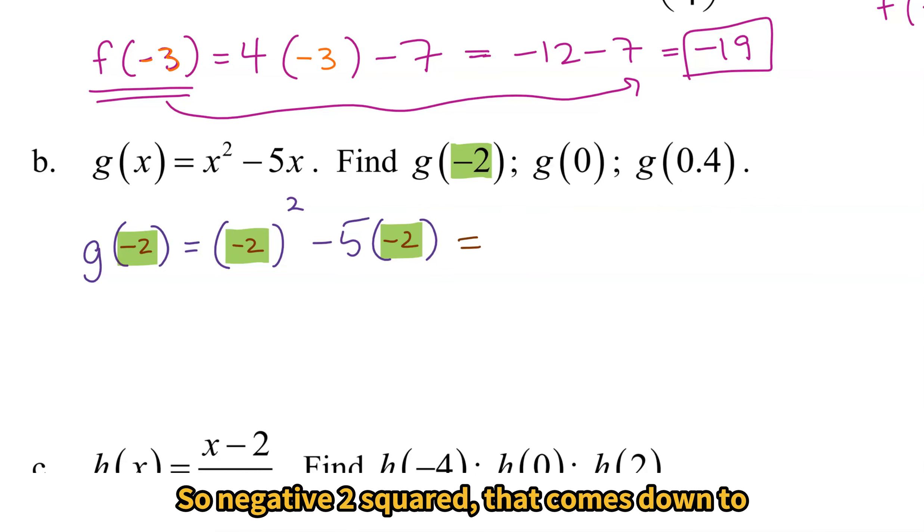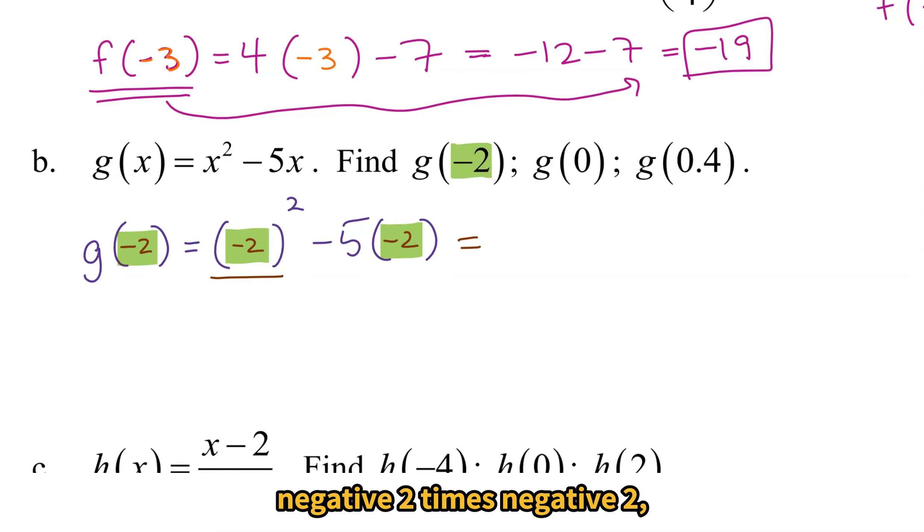So I'm going to put in -2 into all of the parentheses. It's just another way to think about evaluating to create this skeleton that then you can plug in the numbers. So (-2)² comes down to -2 times -2, which will give me a positive 4. Be careful with those negatives. -5 times -2 is positive 10. So 4 + 10 will give me 14.